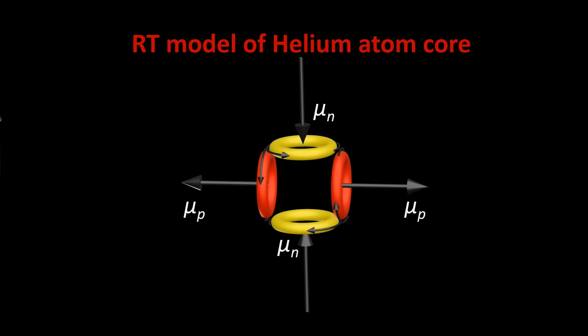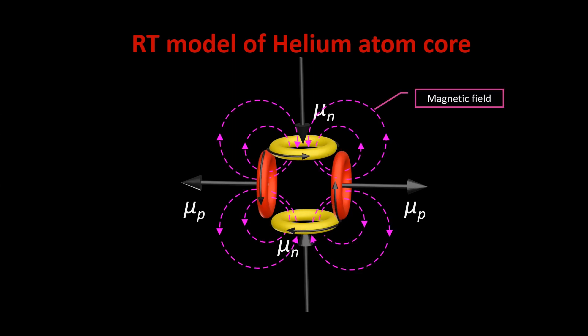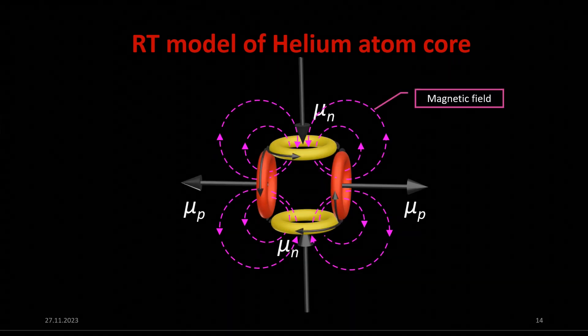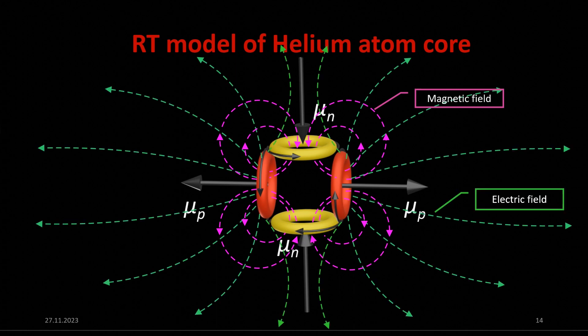Because the motion of charges in both the proton and neutron have the same direction, their magnetic fields add up to create a force that holds the proton and neutron together. Due to the velocity of the charges and the small radius of the proton and neutron, this force is very large and we can call it a strong nuclear force. The electric fields of both protons repel each other and split the nucleus of the helium atom into two parts.